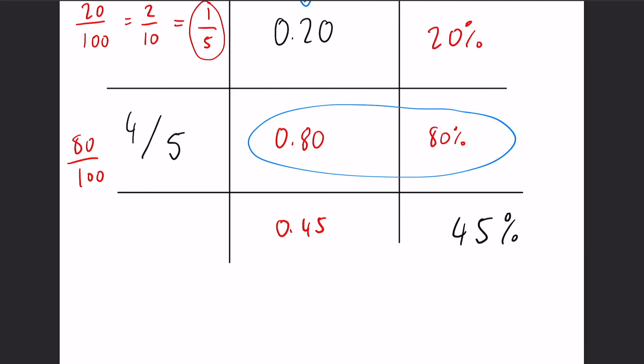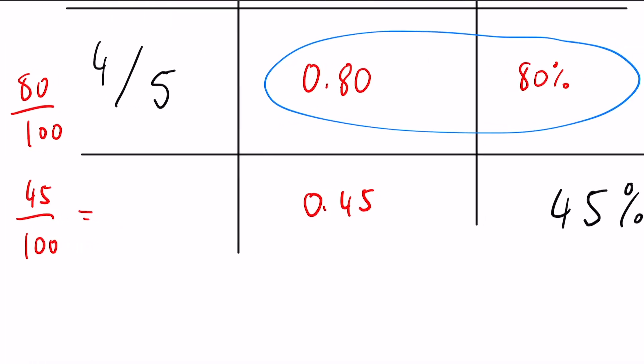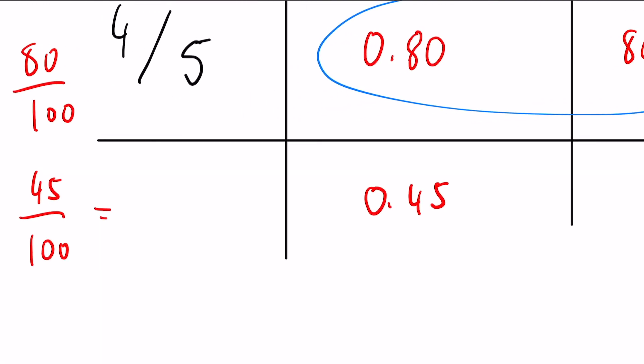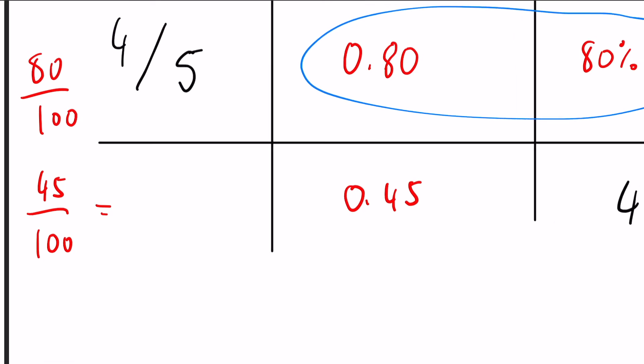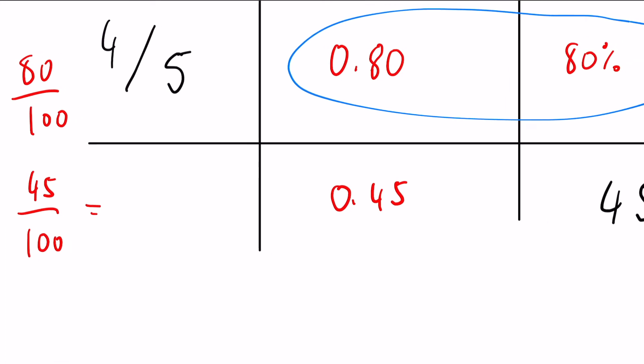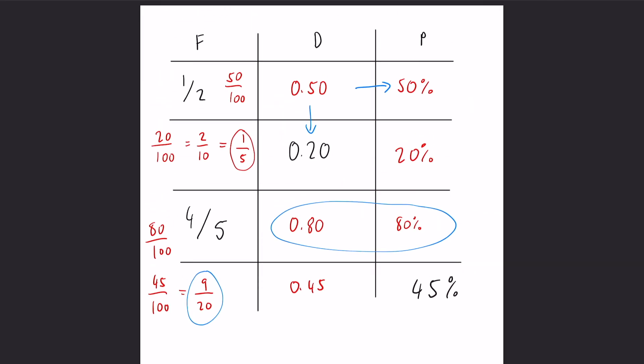Now the fraction, we can just simply write this again as 45 over 100. And it's just a matter of simplifying it to get it in its simplest form. Now 45 and 100 can both be divided by 5. Again, this might not be too obvious at the start if you're new to this kind of stuff. But with practice, this becomes a bit more apparent. So if we divide both of these by 5, we learnt before that 100 divided by 5 is 20. And 45 divided by 5 is going to give us 9, and that is going to be our final answer here. So 9 over 20.